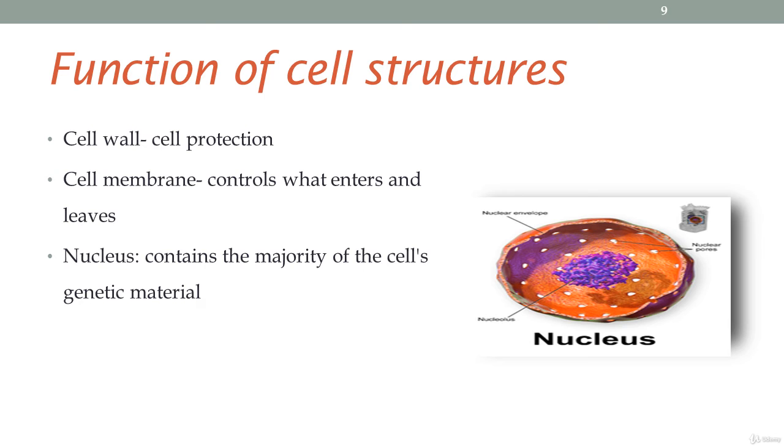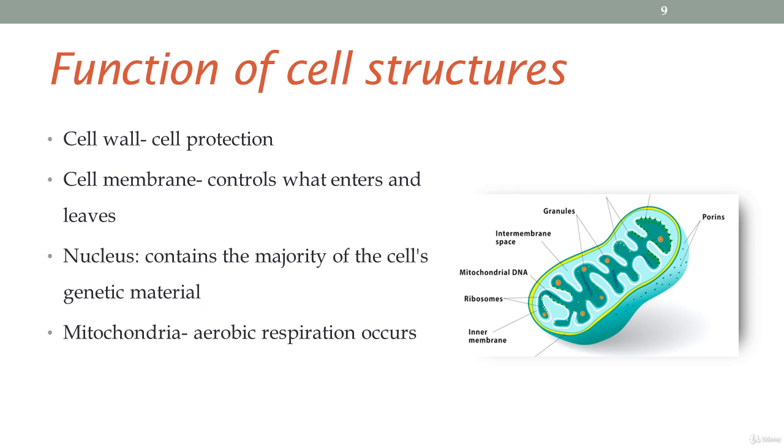Next, we have the nucleus. The nucleus contains most of the genetic materials, and that is our DNA. Then we have the mitochondria. The mitochondria is also known as a powerhouse, and the reason why it is called a powerhouse is because this is where energy is being produced. Here is where aerobic respiration occurs.